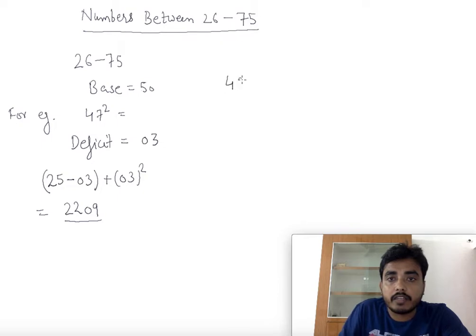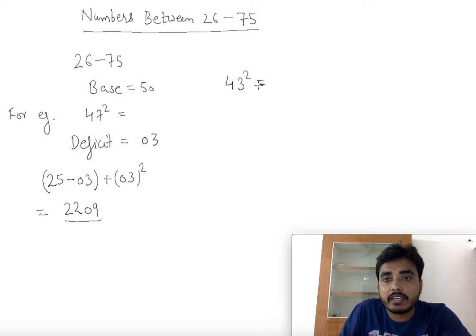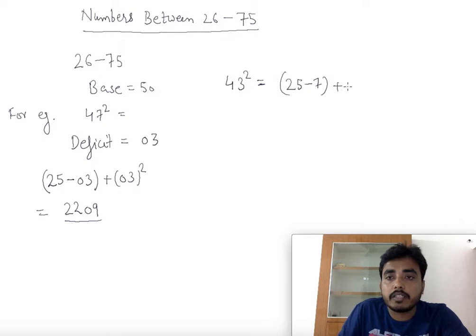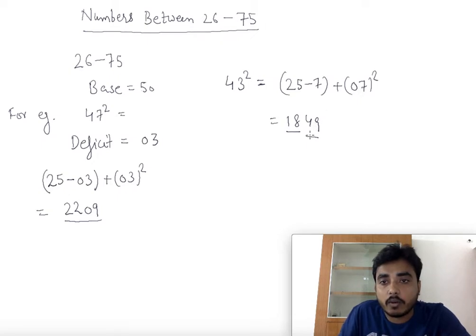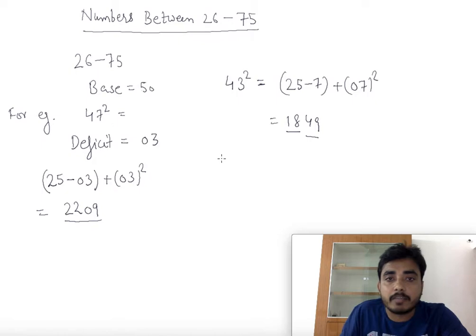Now let's find the square of 43. 43 is 7 lesser than 50. So we compute 25 minus 7 plus 7 squared. 25 minus 7 is 18 and 7 squared is 49. We always write the last two digits, so the answer is 1849.